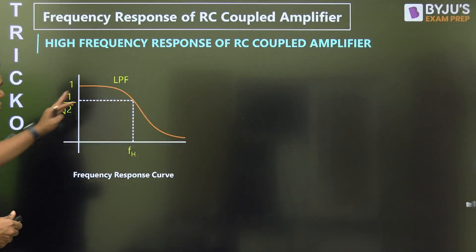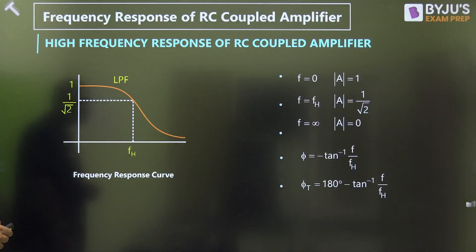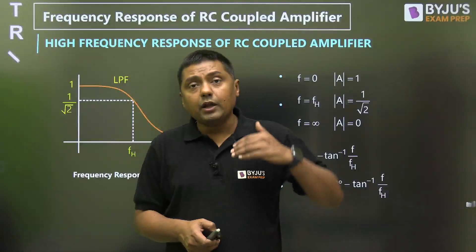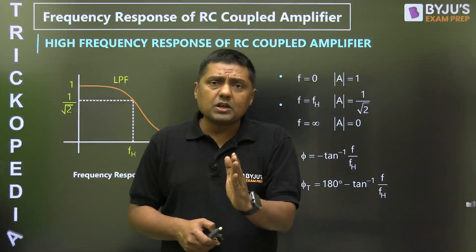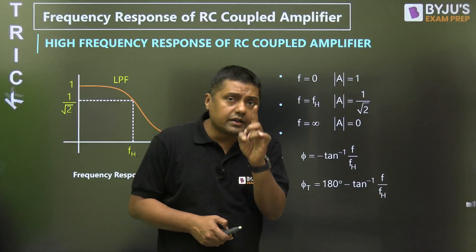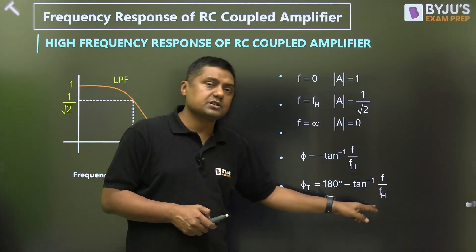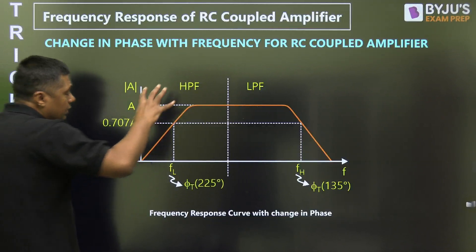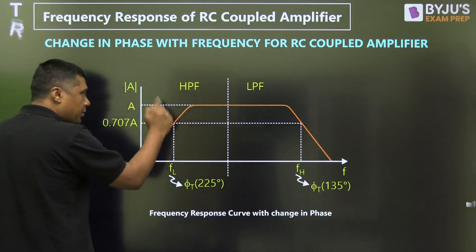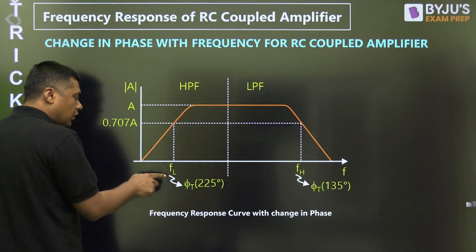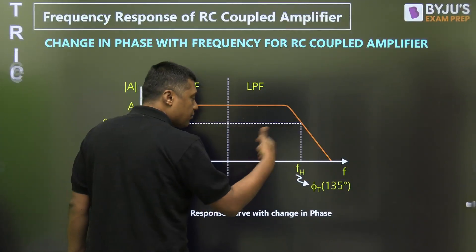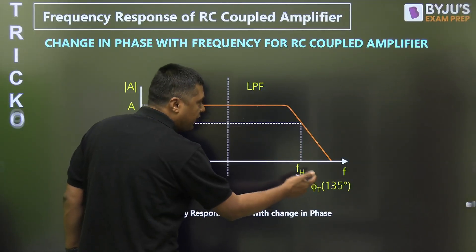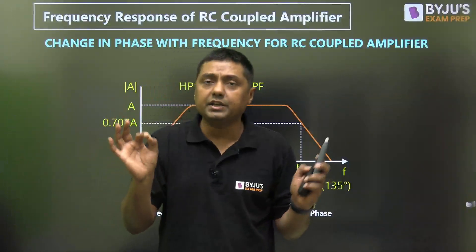Since this is a common emitter configuration, it has a 180-degree phase shift at mid frequency. At high frequency, it acts as a low-pass filter (lagging), so the total phase shift becomes 180° − tan⁻¹(F/F_H). At the upper cut-off frequency F_H, this becomes 135°. At low frequency, it acts as a high-pass filter, so the phase shift becomes 180° + tan⁻¹(F_L/F), and exactly at the lower cut-off frequency it becomes 225°.